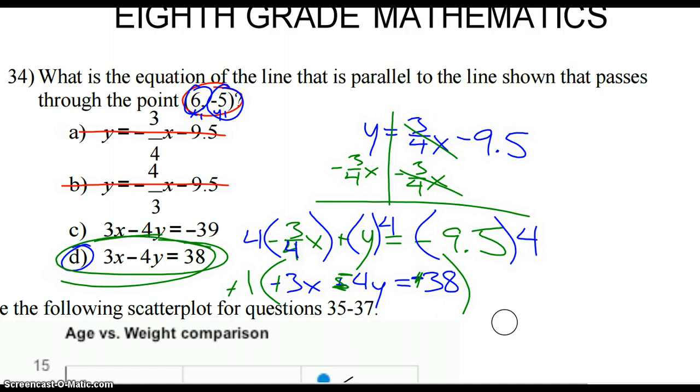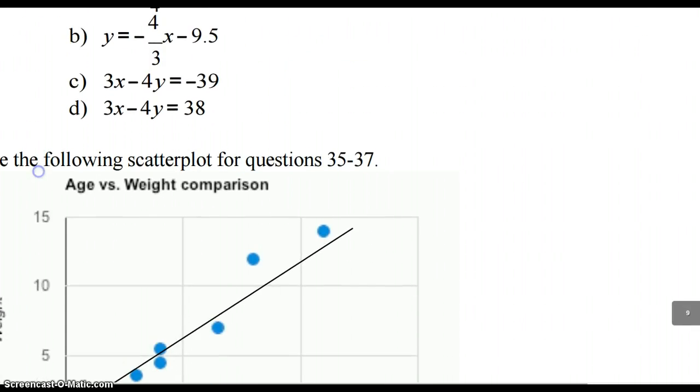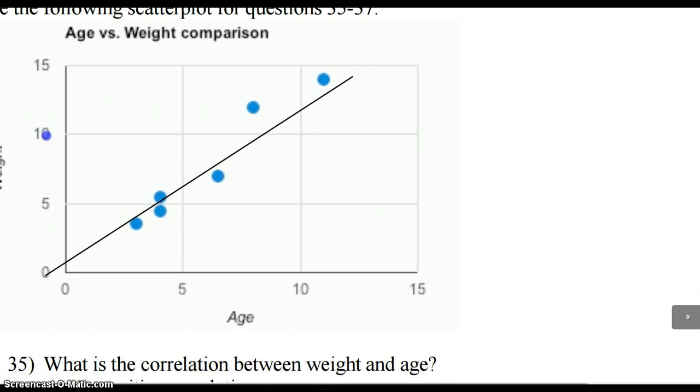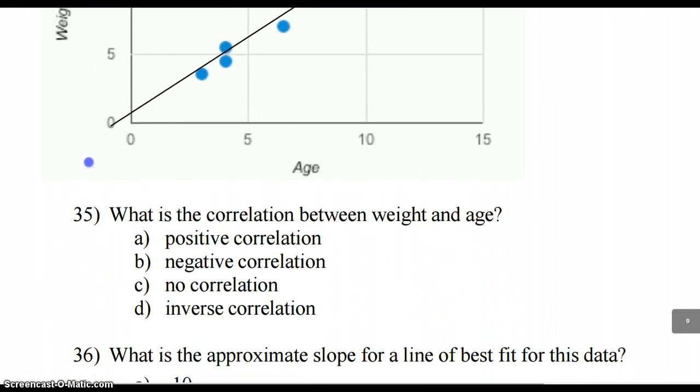All righty. And lastly, this one's real quick, I promise. And we're going to use it for the next couple as well. So we have a scatter plot. And the first thing it asks us about this is, what is the correlation between weight and age? And it looks like this is a positive correlation as it rises from left to right. Or as one increases, the other also increases. All right. So we'll finish up with the last video. And that'll be it for the MCA Package Solutions.